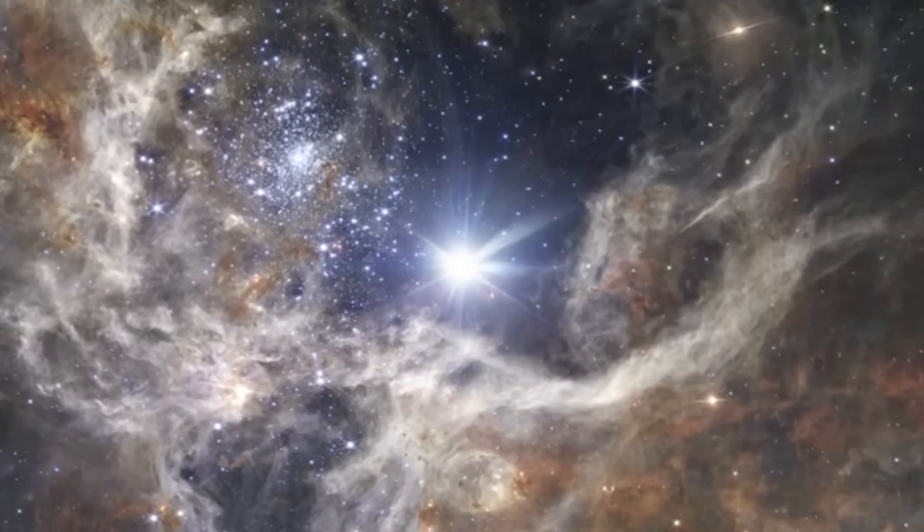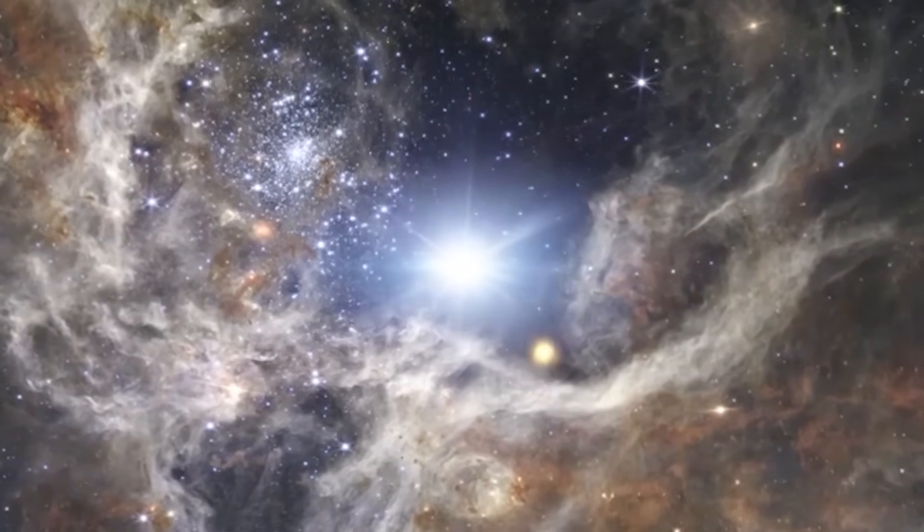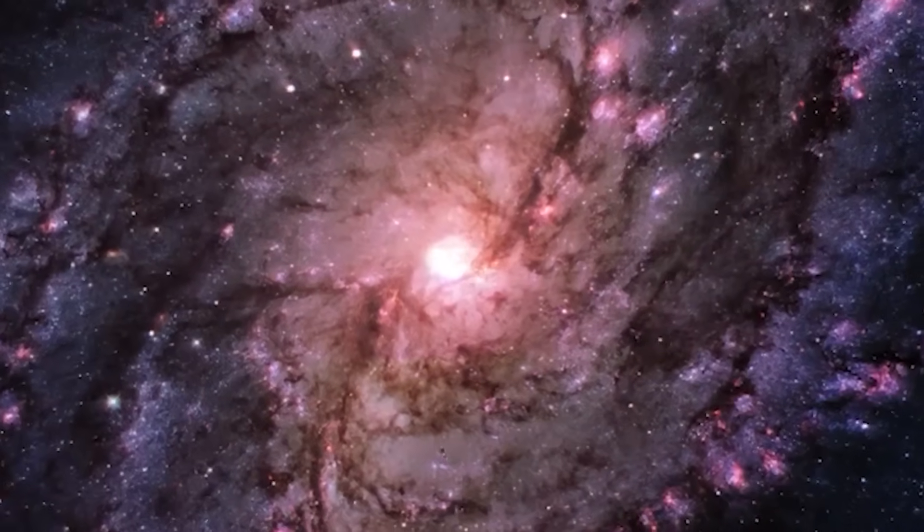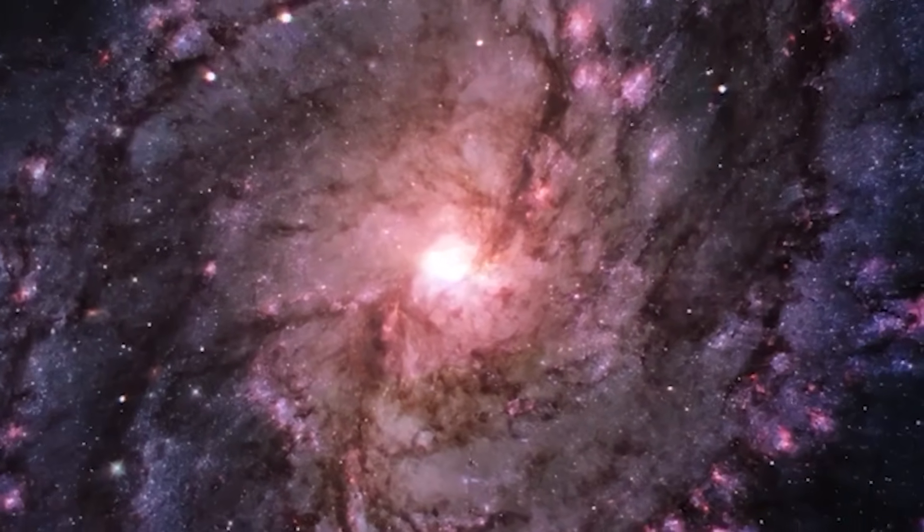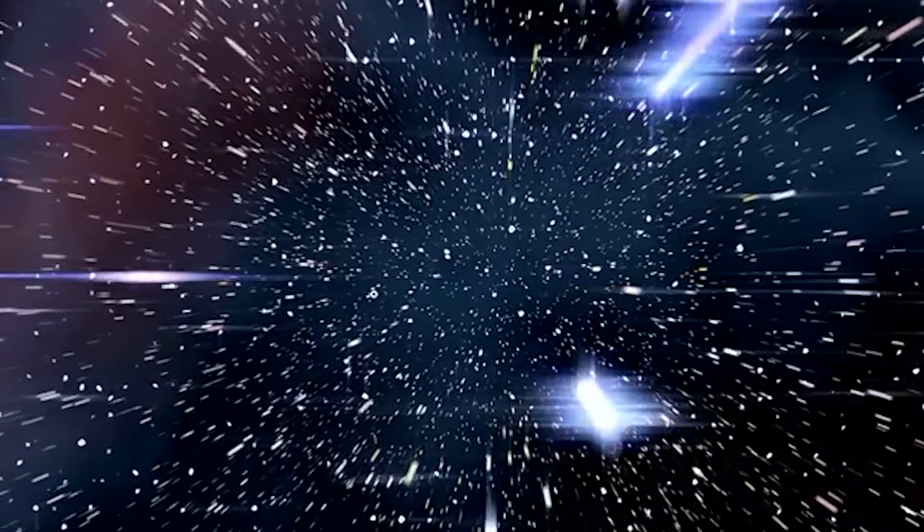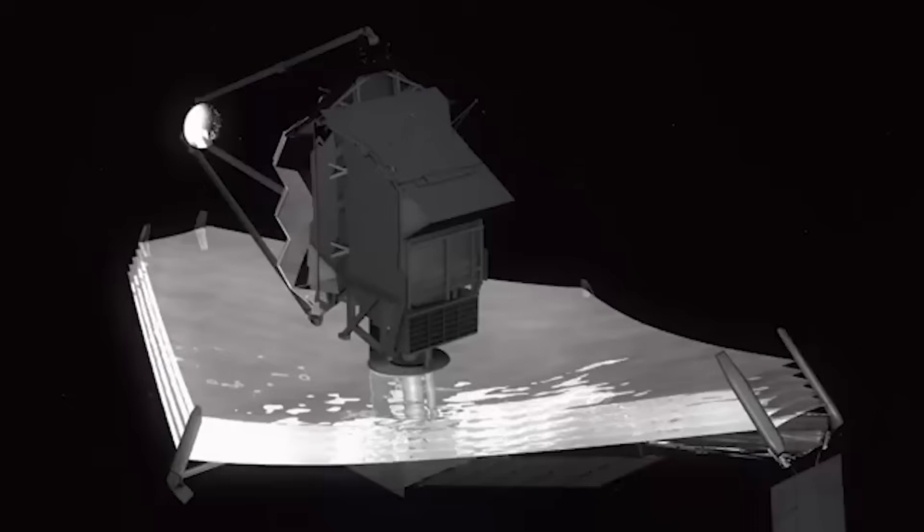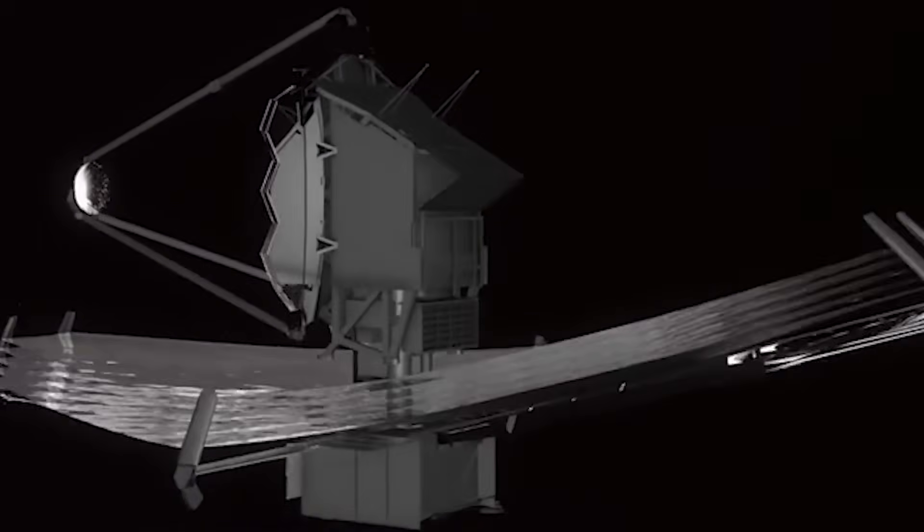Webb's deep-field images show spirals, bars, and structures that force us to rewrite the timeline of cosmic evolution. The universe was building itself far faster than our theories predicted, but Webb's magic doesn't stop with galaxies.